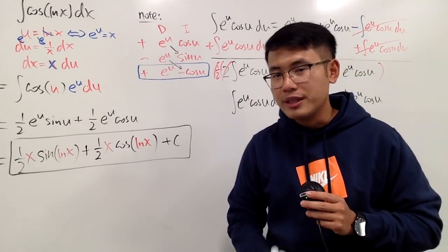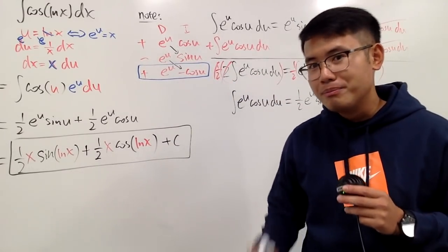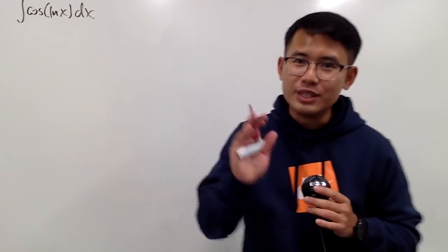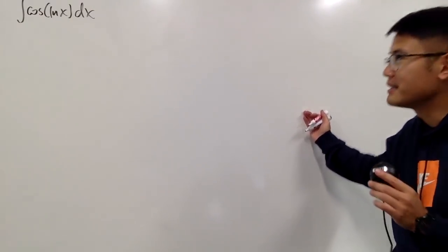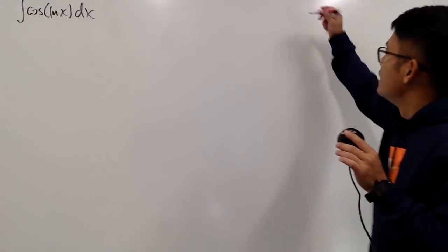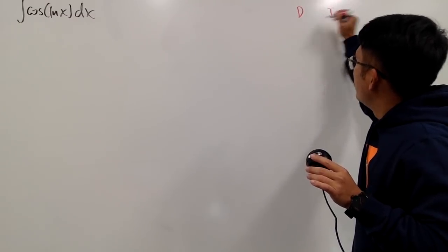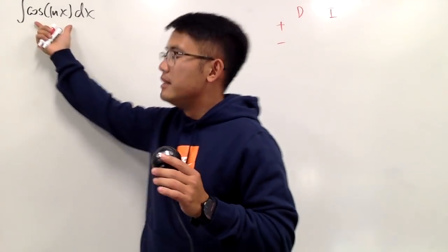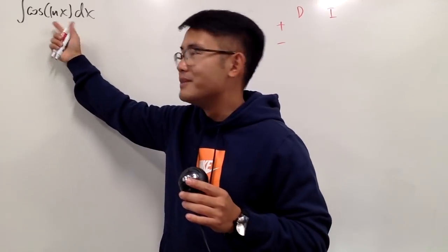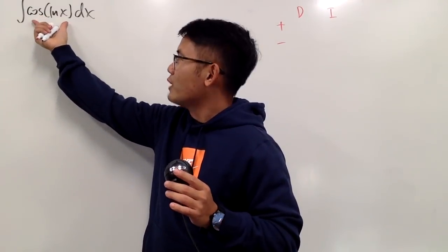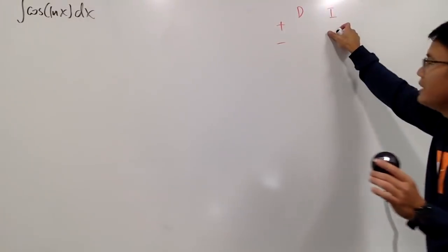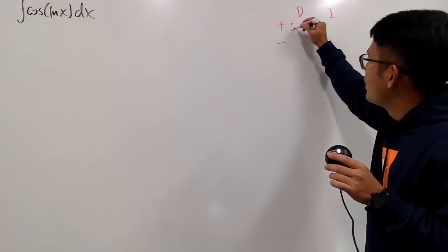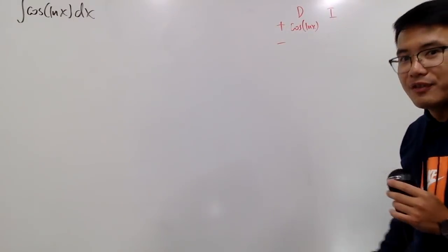Now let me show you another way to do this — maybe we didn't need the u-sub at all. This time we'll just do integration by parts right away using the DI format. Looking at the original integral, cosine of ln x is just one thing, so I cannot put it in the I column to be integrated since that's exactly what I'm trying to find. So I'll put cosine of ln x in the D column to be differentiated.